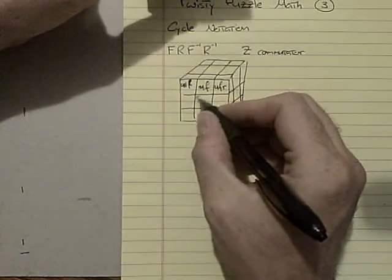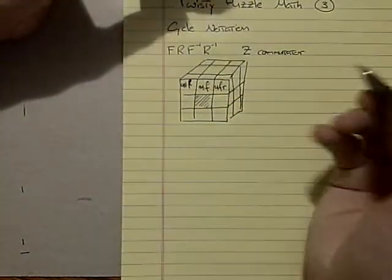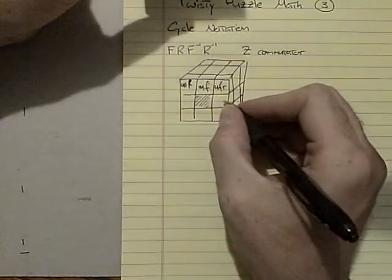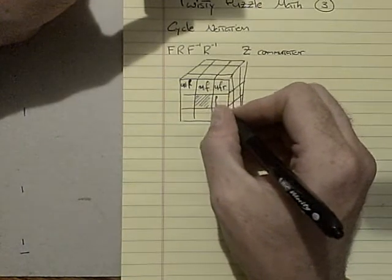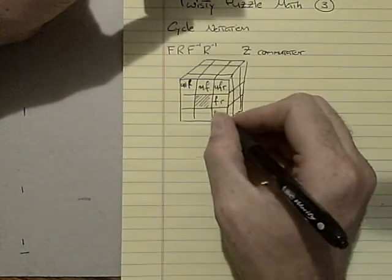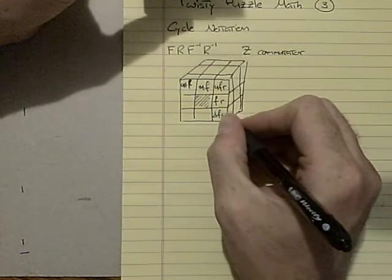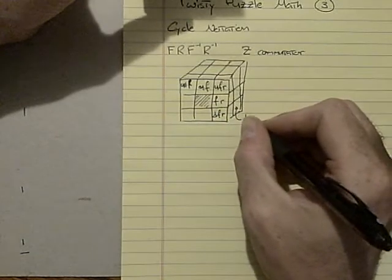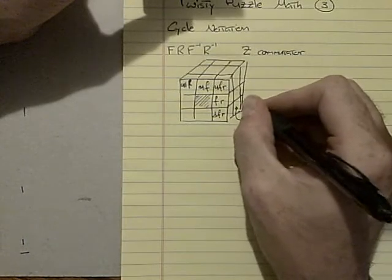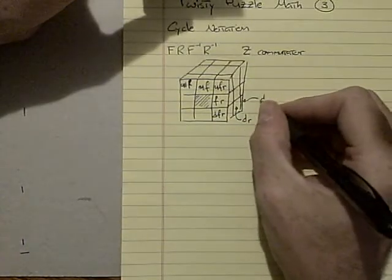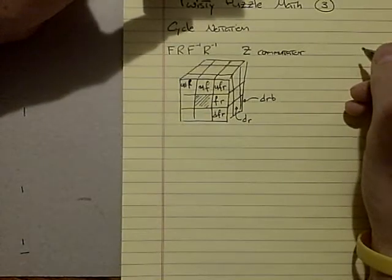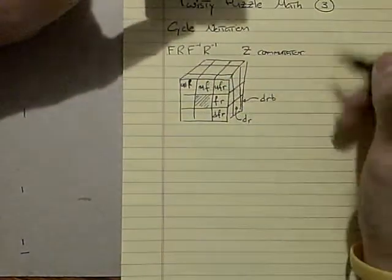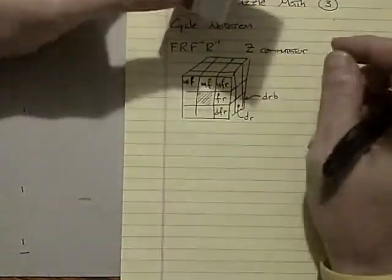We don't label centers because they don't go anywhere. Here's another edge. This would be the front right. This would be the down front right. This edge right here would be down right. And this back edge would be down right back. So these are the pieces that have been changed due to this move.